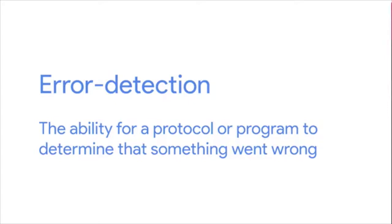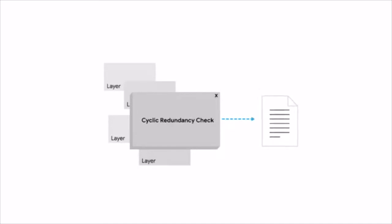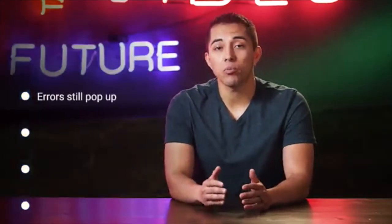Error detection is the ability for a protocol or program to determine that something went wrong. Error recovery is the ability for a protocol or program to attempt to fix it. For example, you might remember that cyclical redundancy checks are used by multiple layers to make sure that the correct data was received. If a CRC value doesn't match the data payload, the data is discarded. At that point, the transport layer will decide if the data needs to be reset. But even with all of these safeguards in place, errors still pop up.